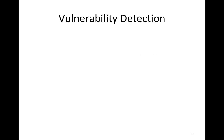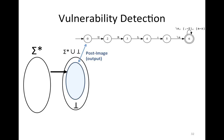How do we detect this vulnerability? Given any input — assuming sigma-star as input, as in the previous analysis — we compute and over-approximate the post-image of the function. This is the automata representing all possible outputs of the function. As an example, one possible output string returned by the function is: url, semicolon, space, and foo, where slash-s represents a space character.